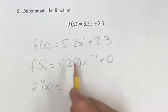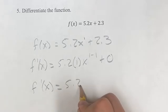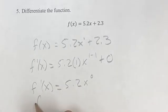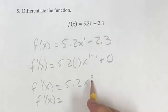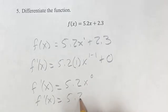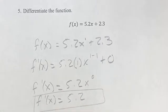But this gives us 5.2 times 1 is 5.2, x to the 0. x to the 0 is just 1, so the derivative is just 5.2, which is going to be your final answer.